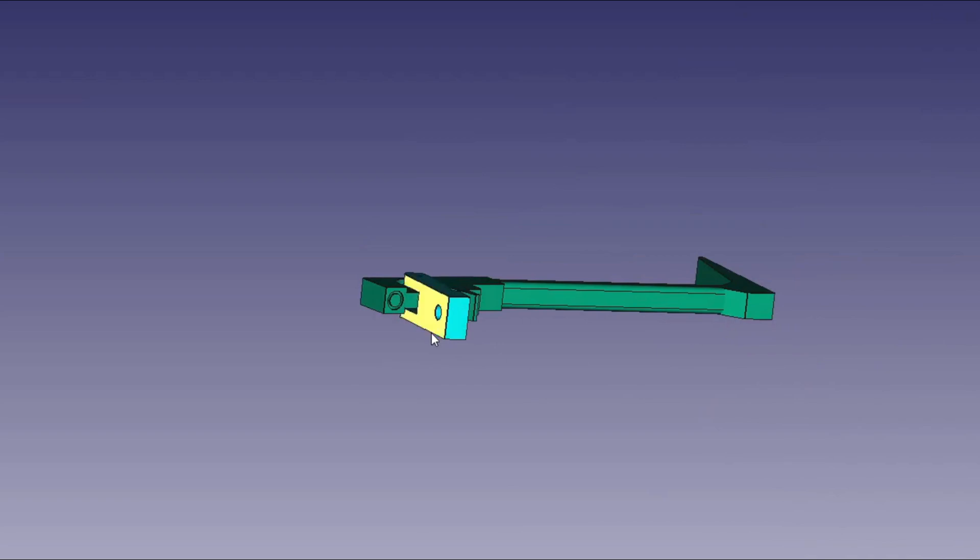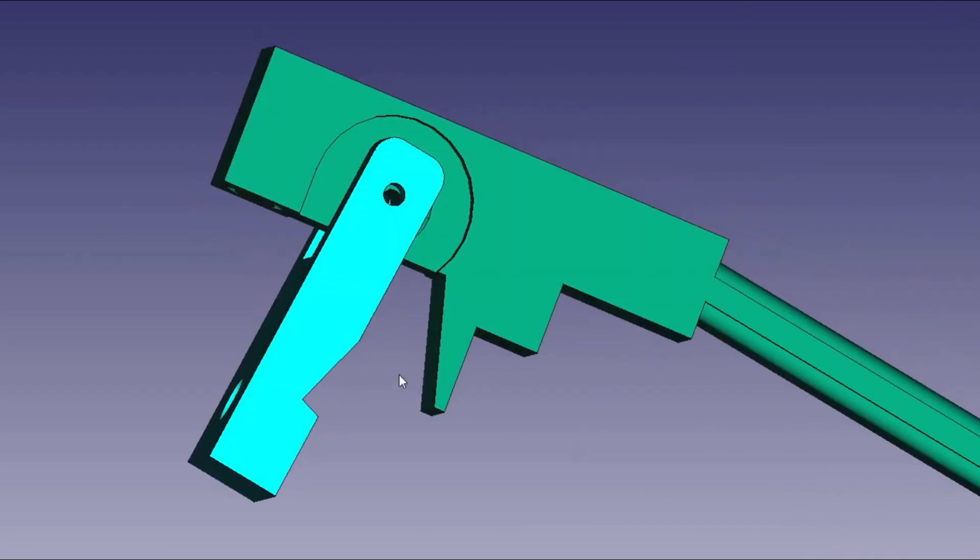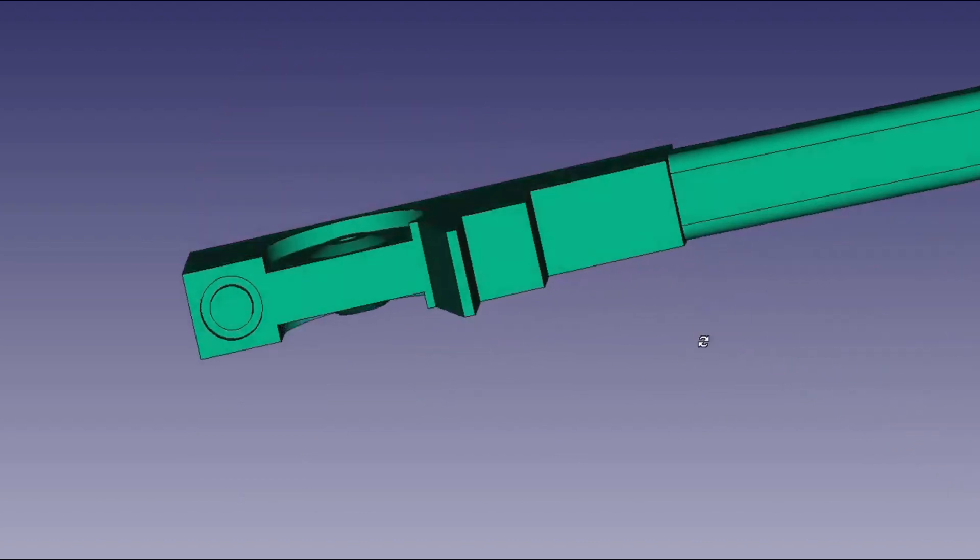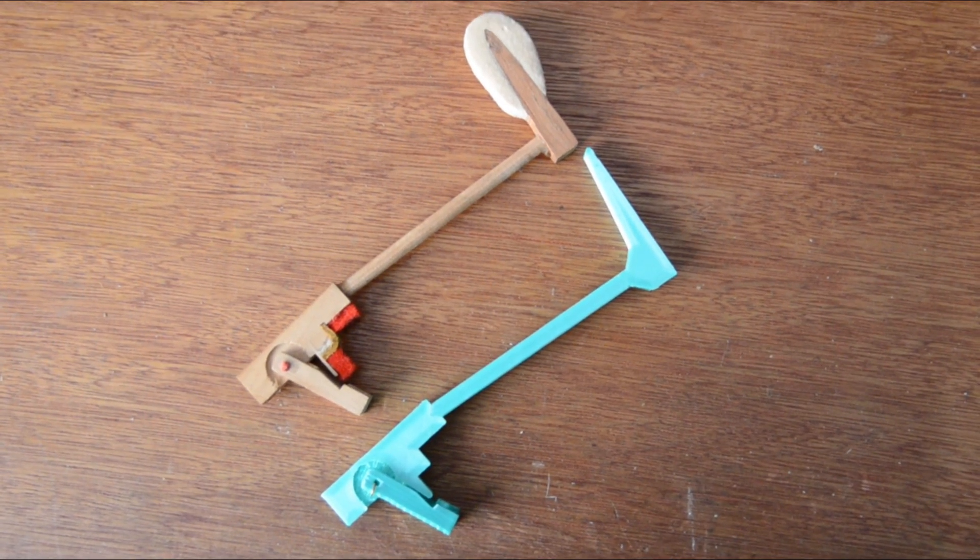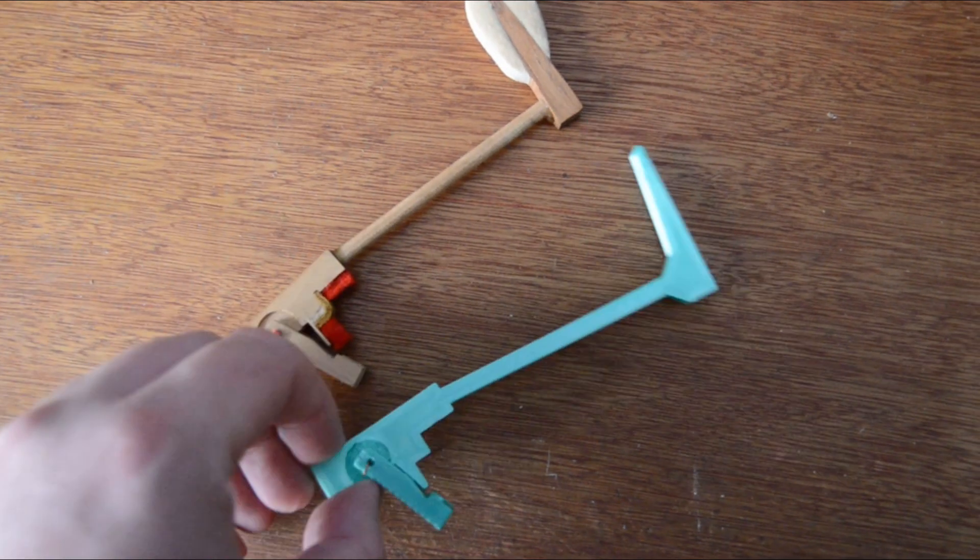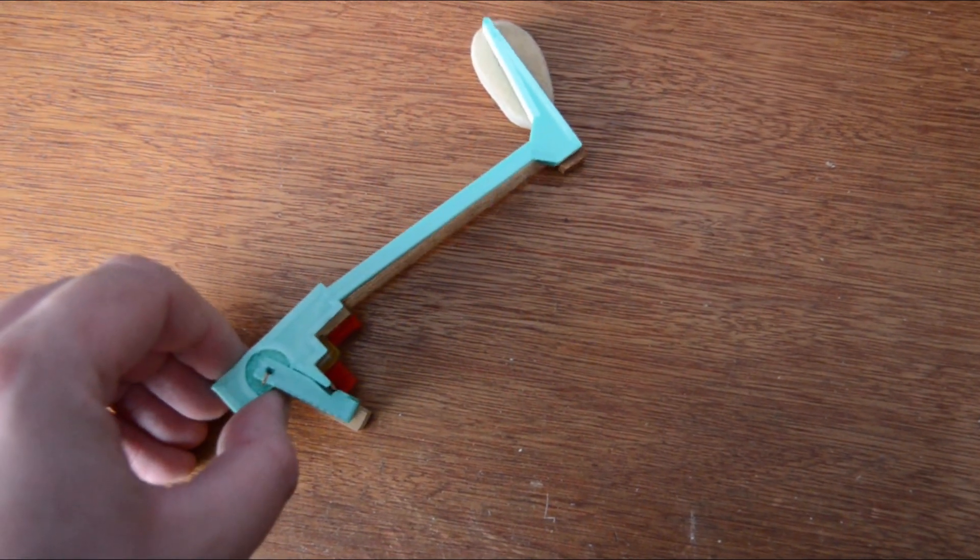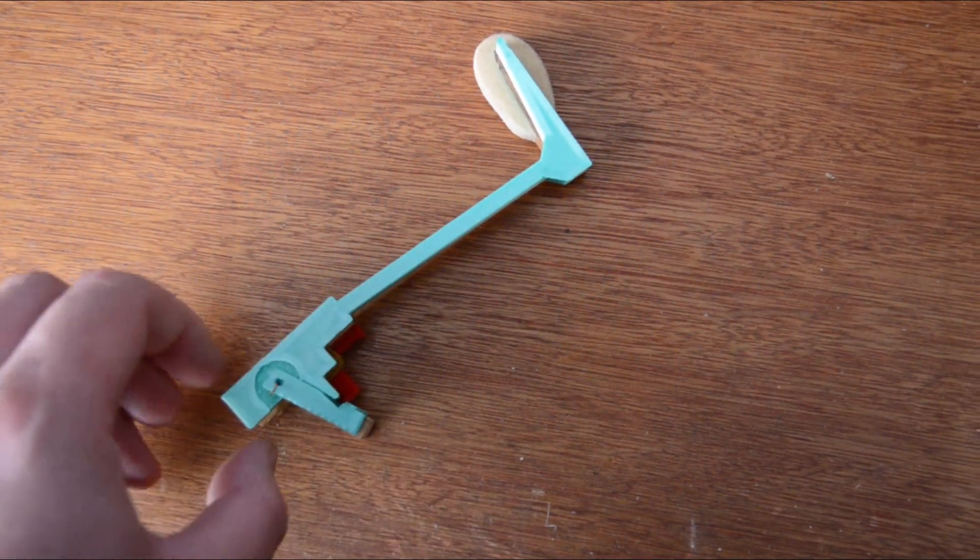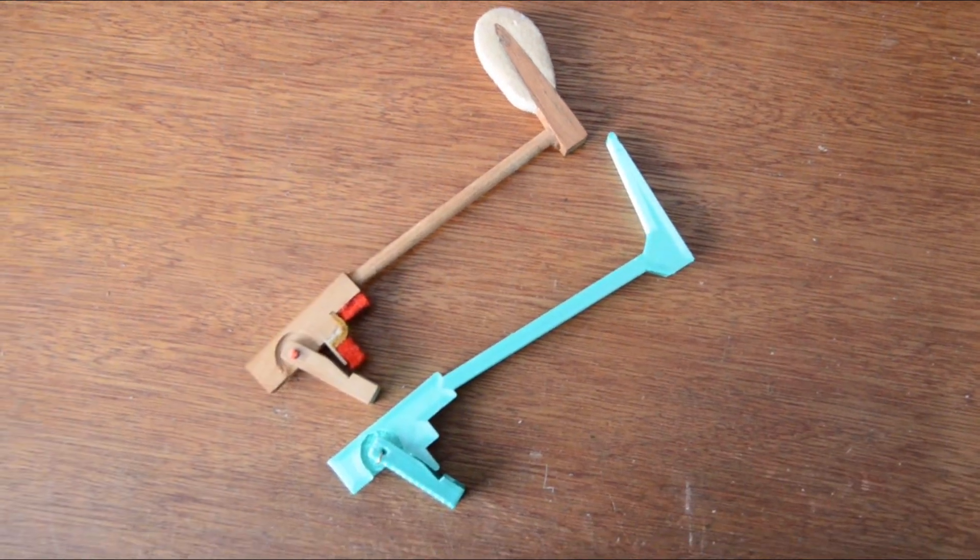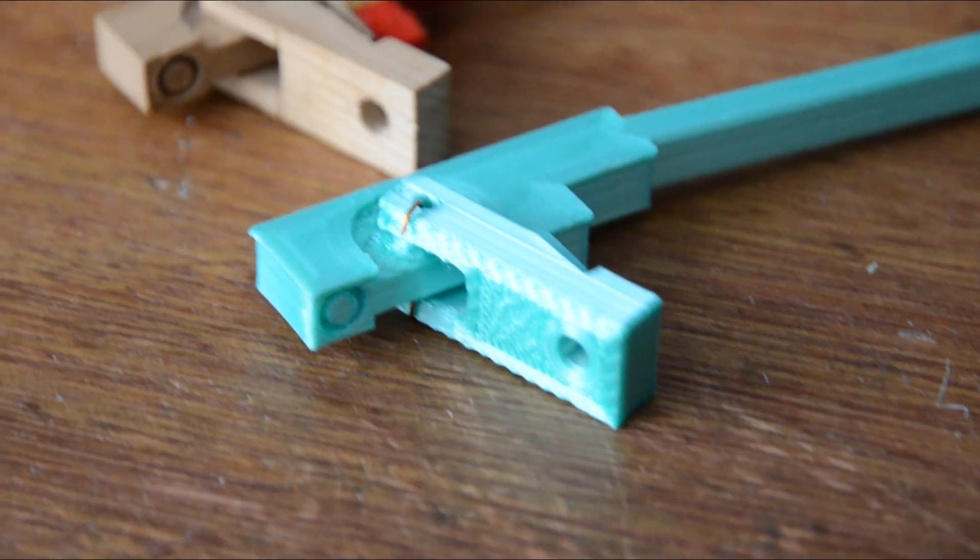There's no advantage now to having that round section, so we're going to make that square so that it's going to sit on the print bed. The bracket will just keep the same shape as the original. And once more, let's print this. This looks pretty cool. I think this could work. Let's get it on the assembly. Yeah, that looks pretty cool.